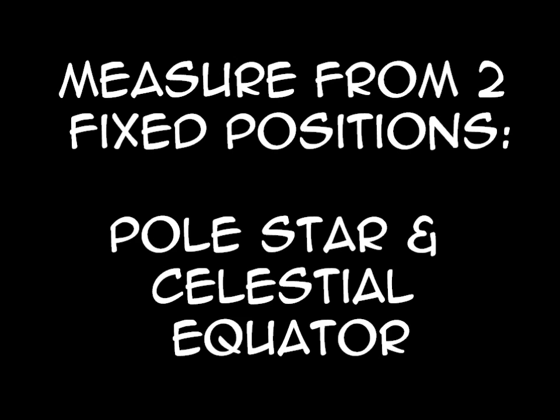Coordinates in astronomy: positions of stars are measured by angles seen from Earth. They are measured from two fixed positions — the pole star and the celestial equator. The pole star doesn't appear to move as it's directly above the North Pole, and the celestial equator is an imaginary extension of Earth's equator.